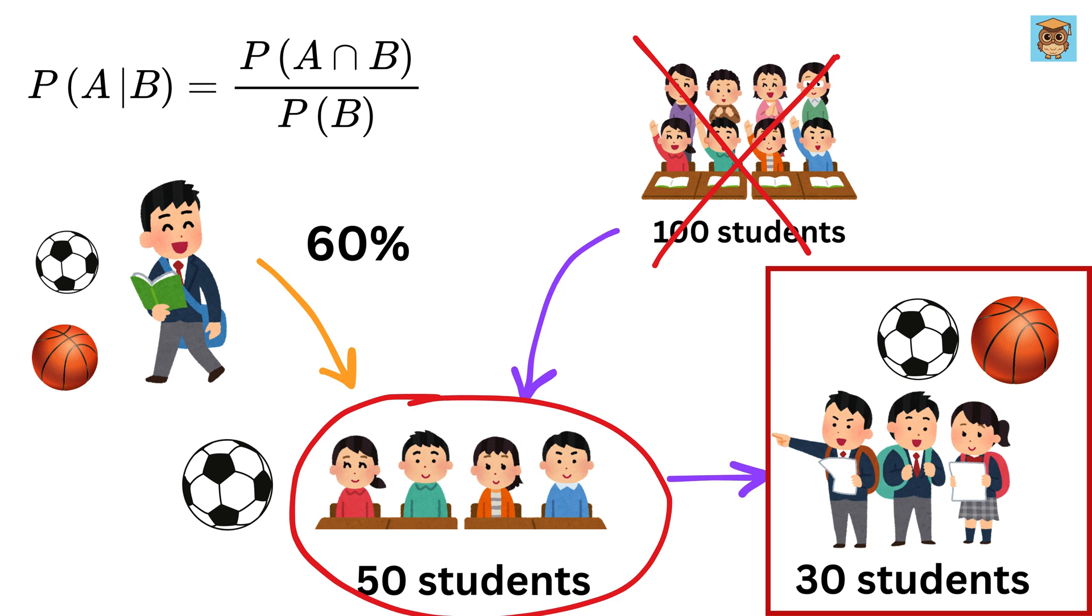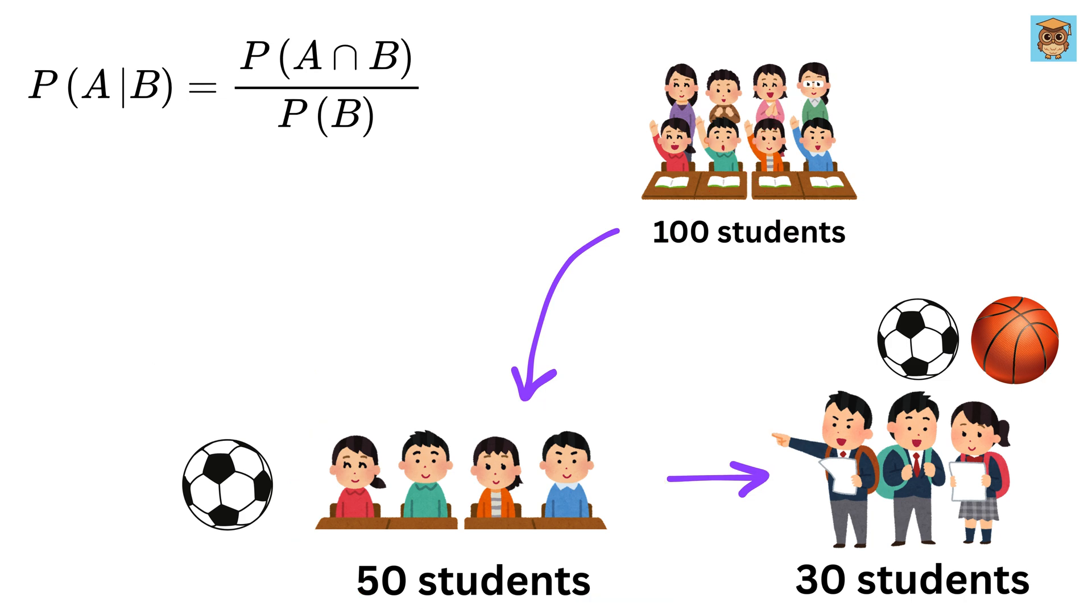That's a clear example of conditional probability, where we use what we already know to figure out the chance of something else. Now let's look at how this fits into the actual formula. Let's call the event of playing basketball as event A and the event of playing football as event B.